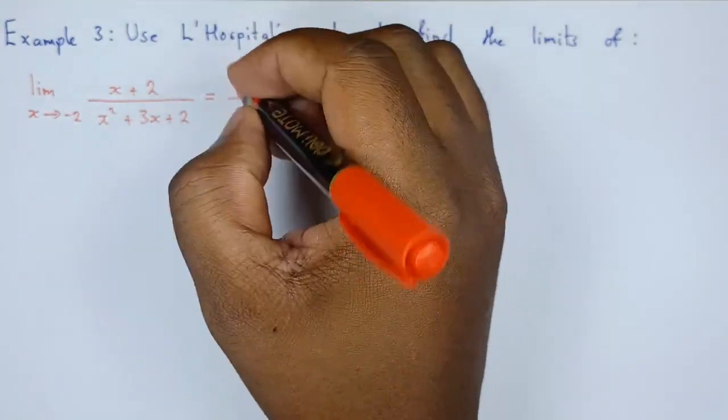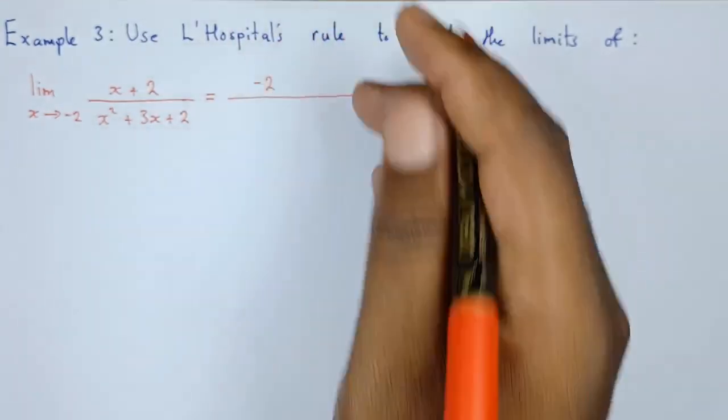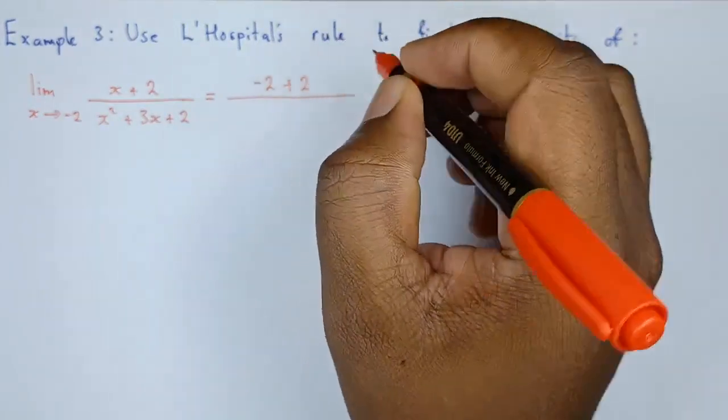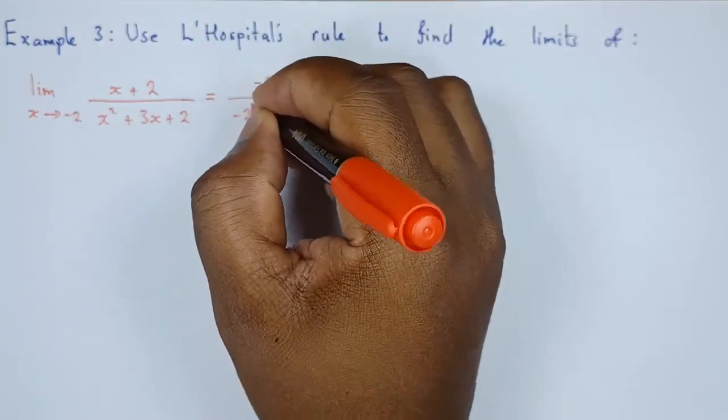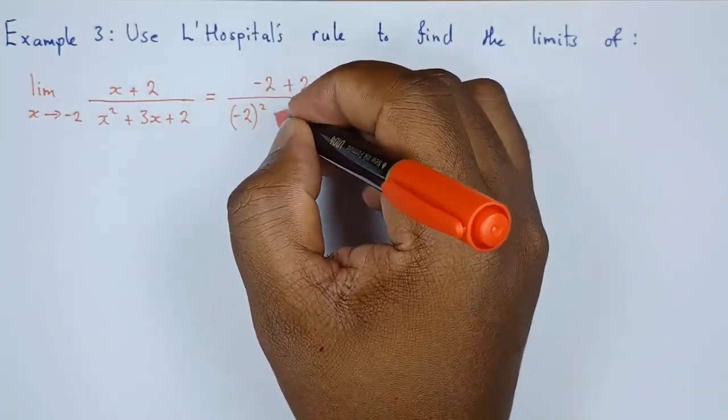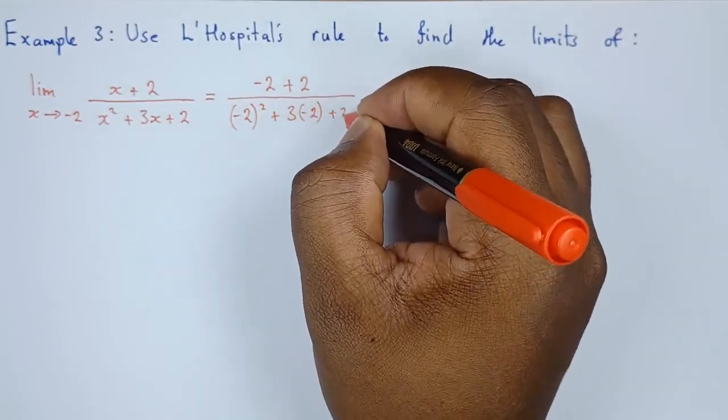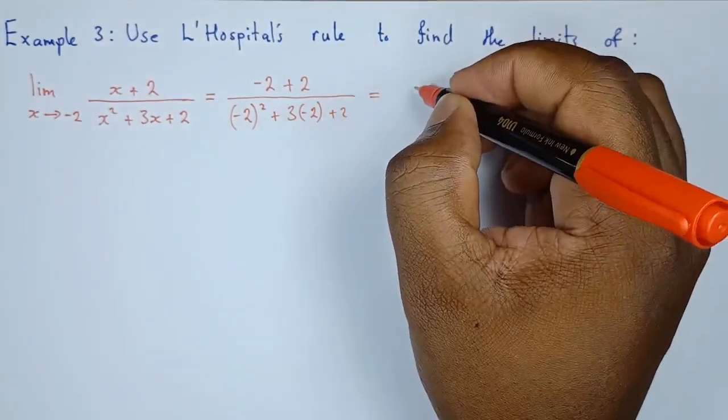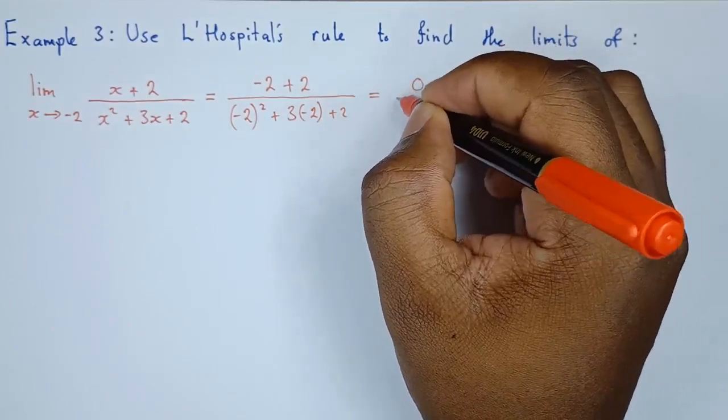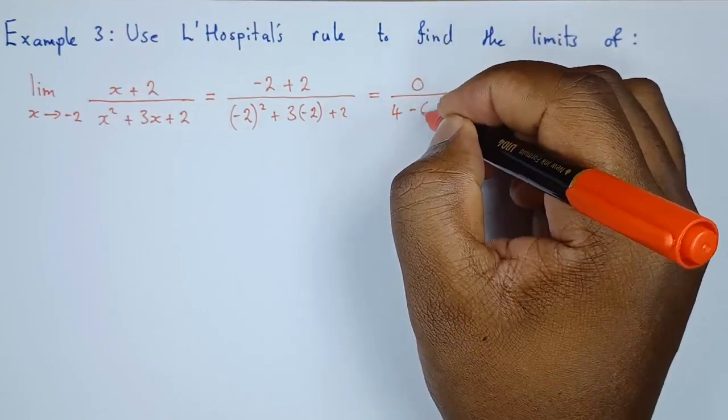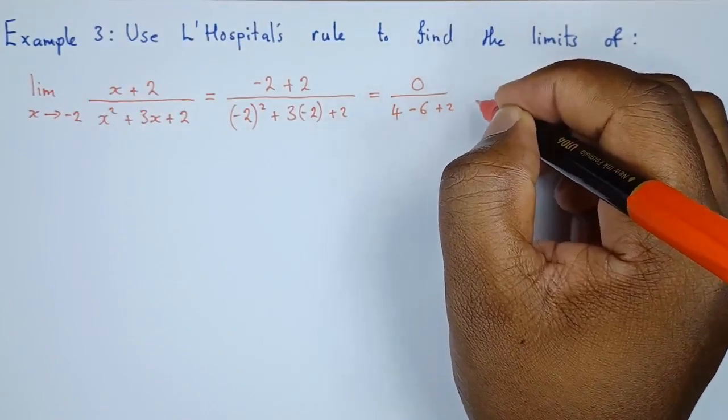So we have negative 2 plus 2 divided by negative 2 squared plus 3 times negative 2 plus 2. So what do we get? In the numerator we get 0, in the denominator this will give us 4 minus 6 plus 2.